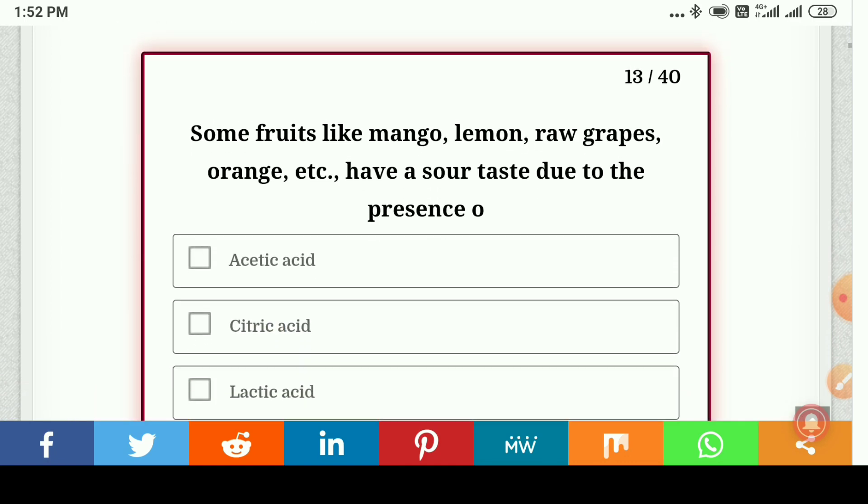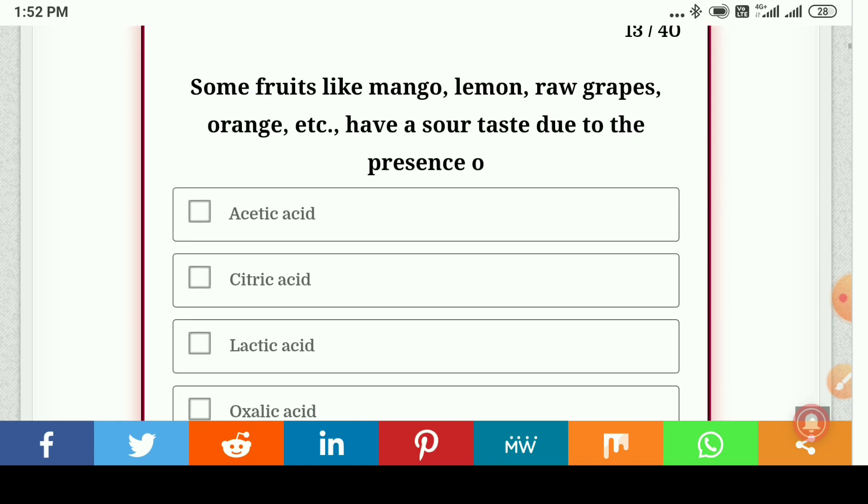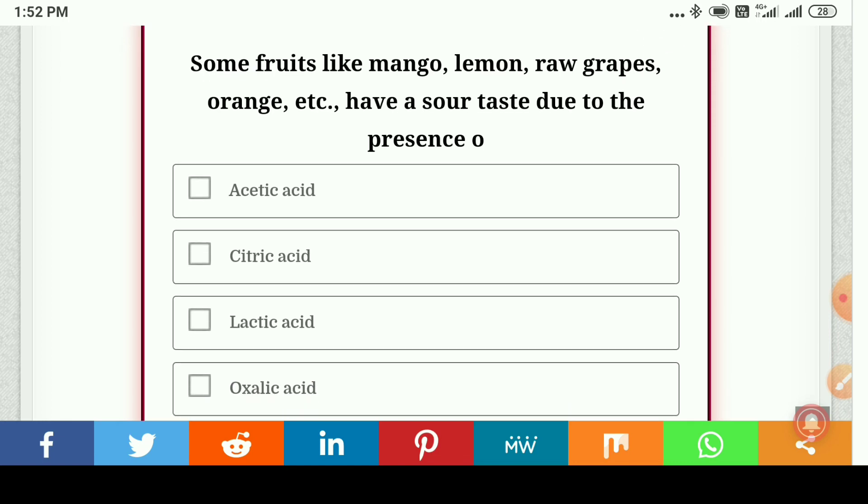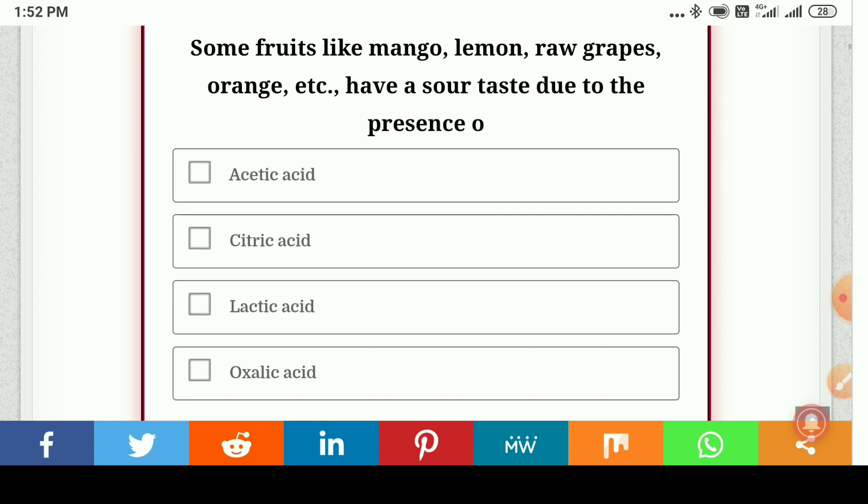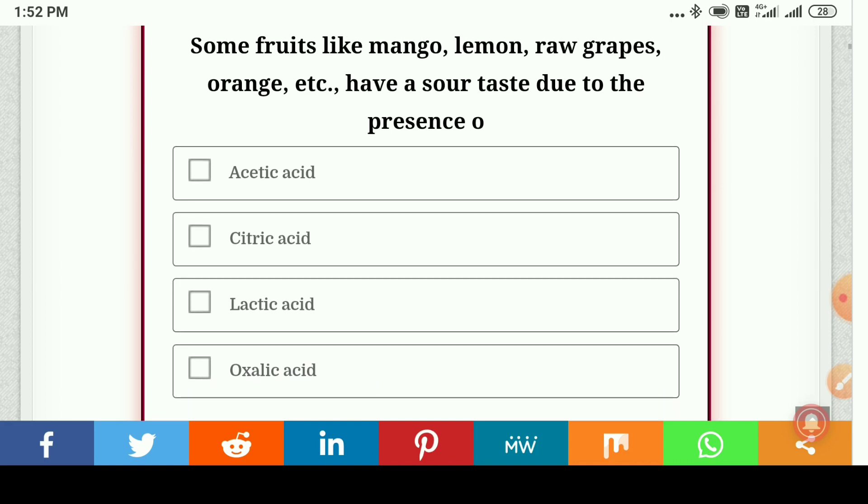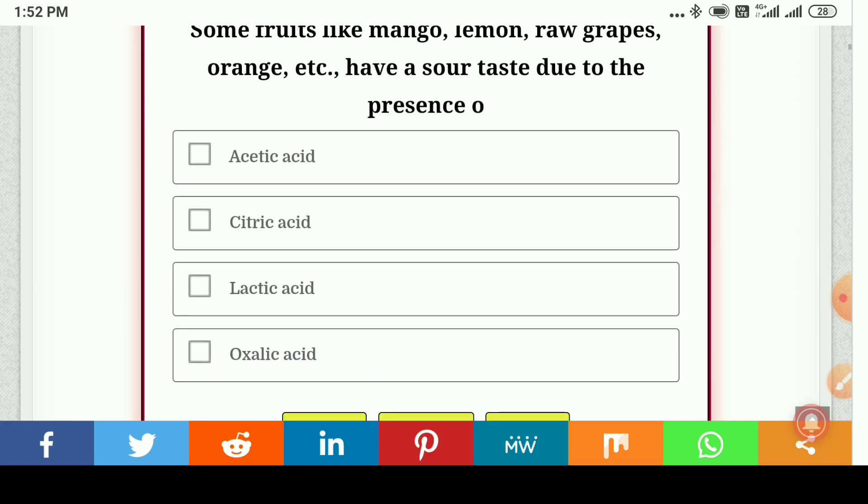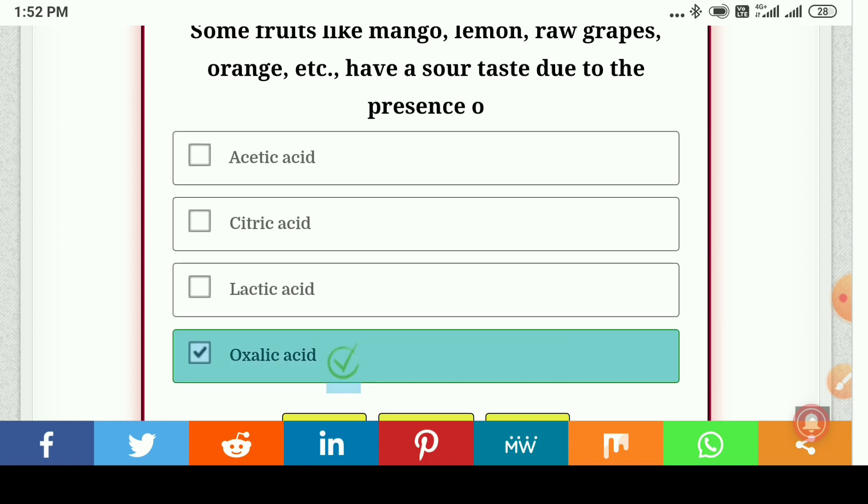Some fruits like mango, lemon, raw grapes, orange etc. have a sour taste due to the presence of acetic acid, citric acid, lactic acid, or oxalic acid. So the answer is oxalic acid.